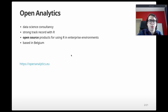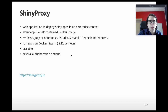Let me first introduce OpenAnalytics. We are a data science consultancy company based in Belgium. We have a strong track record in R and one of the things we do is developing open source projects for using R in enterprise context. ShinyProxy is a web application to deploy Shiny apps in an enterprise context. Every app is a self-contained Docker image, allowing you to host Shiny apps, Dash apps, Jupyter notebooks, RStudio, Streamlit, Zeppelin notebooks, and more. These apps run on Docker, Docker Swarm, or Kubernetes, making ShinyProxy a very scalable solution with several authentication options.